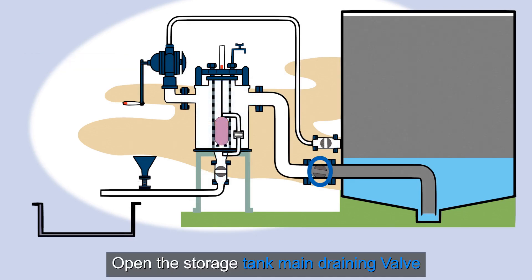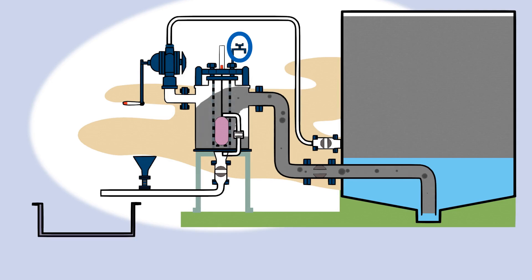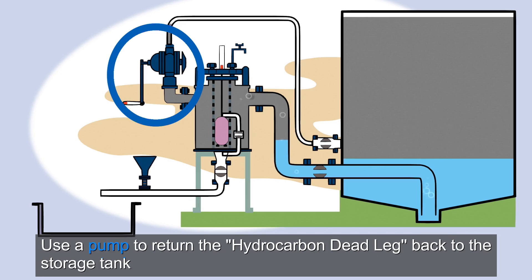Open the storage tank main draining valve. For the first draining only, release the trapped air using the vent valve. Close the vent valve once the air has been released and liquid begins to flow. Use a pump to return the hydrocarbon deadlag back to the storage tank.